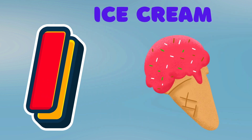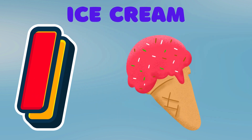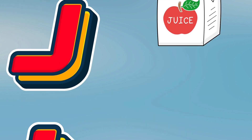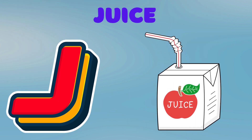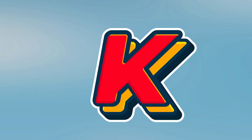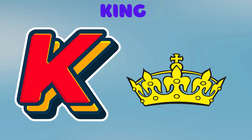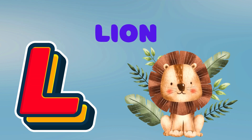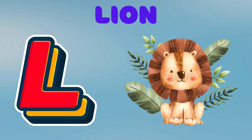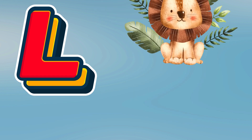I is for ice cream, i-i-ice cream. J is for juice, j-j-juice. K is for king, k-k-king. L is for lion, l-l-lion.